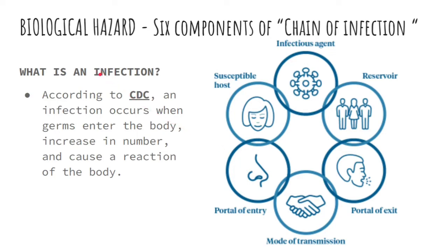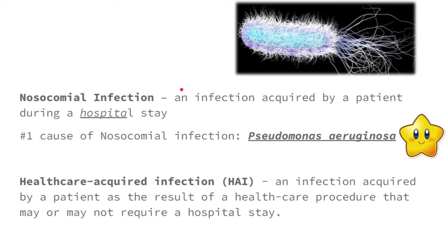According to the CDC, an infection occurs when germs enter the body, increase in number, and cause a reaction of the body. In relation to infection, we have the term nosocomial infection — an infection acquired by a patient during a hospital stay. Please take note: there is a recall question here. The number one cause of nosocomial infection is the bacterium Pseudomonas aeruginosa.